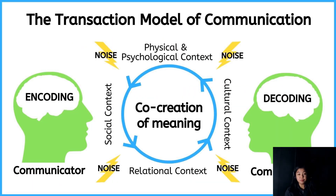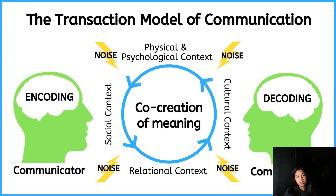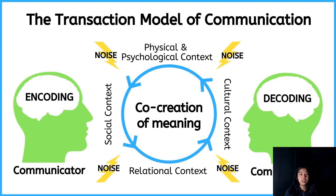Take a look at this diagram — it's full of details. As you can see, we have the sender, who is the encoder at the same time, and the receiver, whose function is to decode the message. When the message is decoded, it means the other party needs to understand it so they can reply accordingly. There are also several barriers — aside from noise, we have physical and psychological barriers, cultural context, relational context, and social context. You will learn more about these barriers in our upcoming lessons.